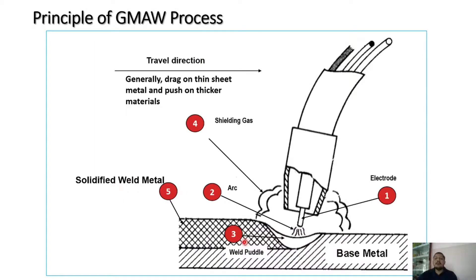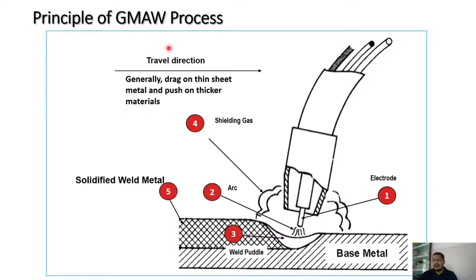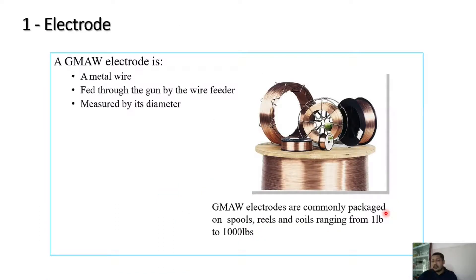The important parts in GMAW include: the electrode, the arc, the weld puddle, the shielding gas, and the solidified metal. The travel direction is also important — generally you drag on thin sheet metal and push on thicker material.